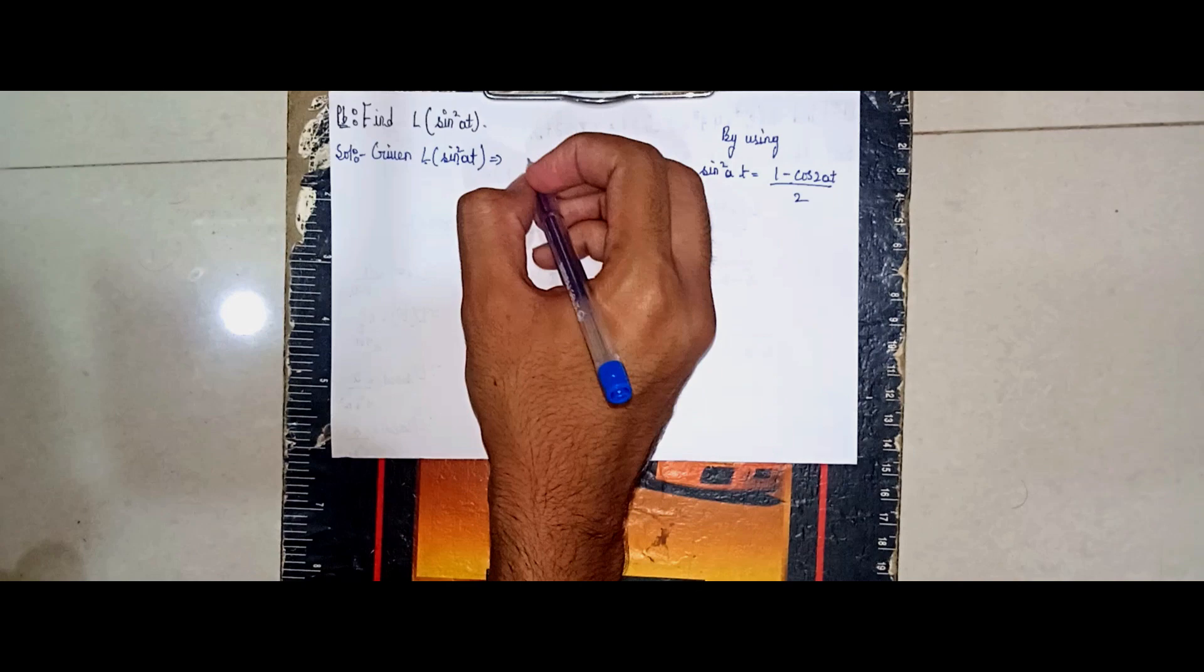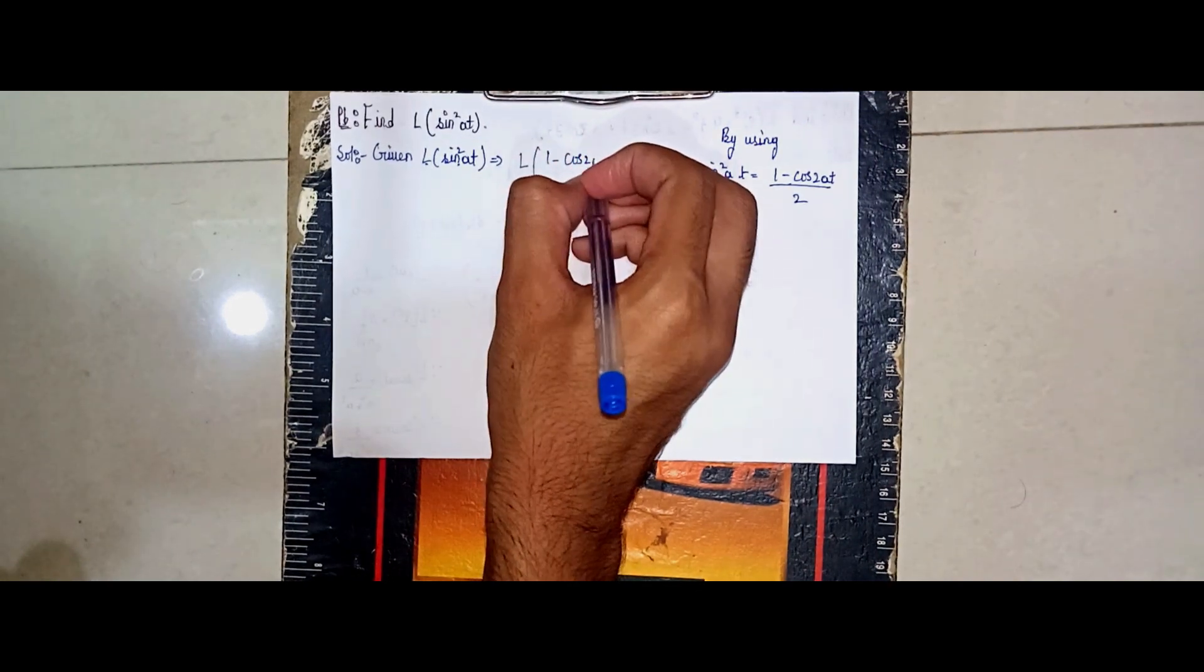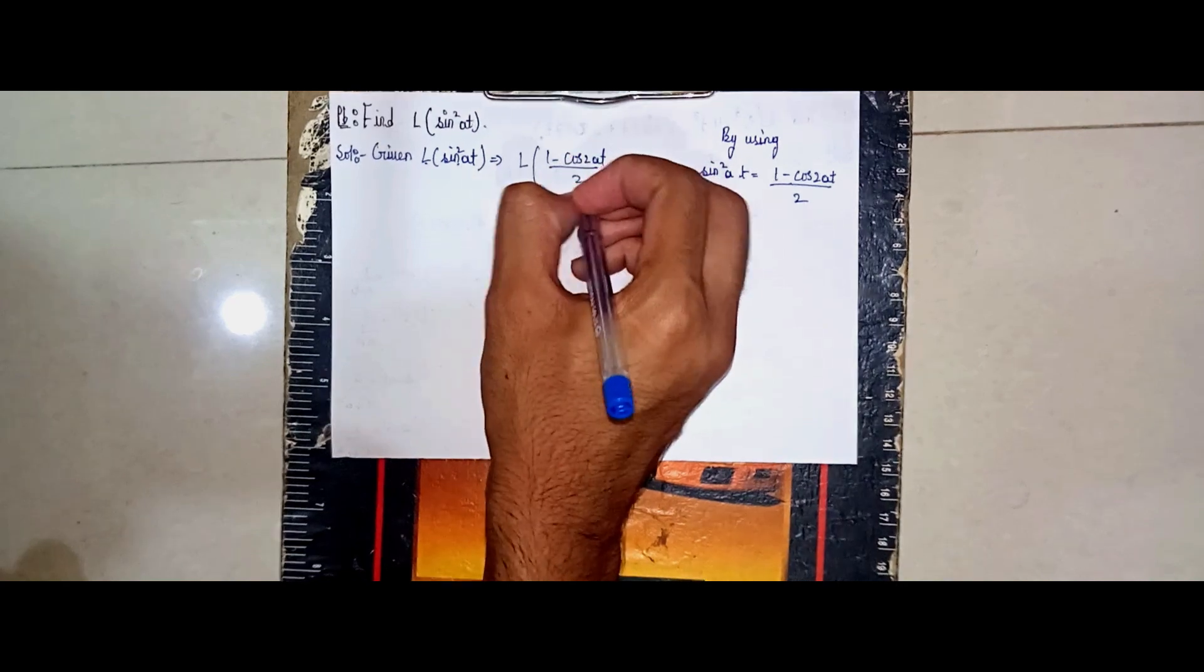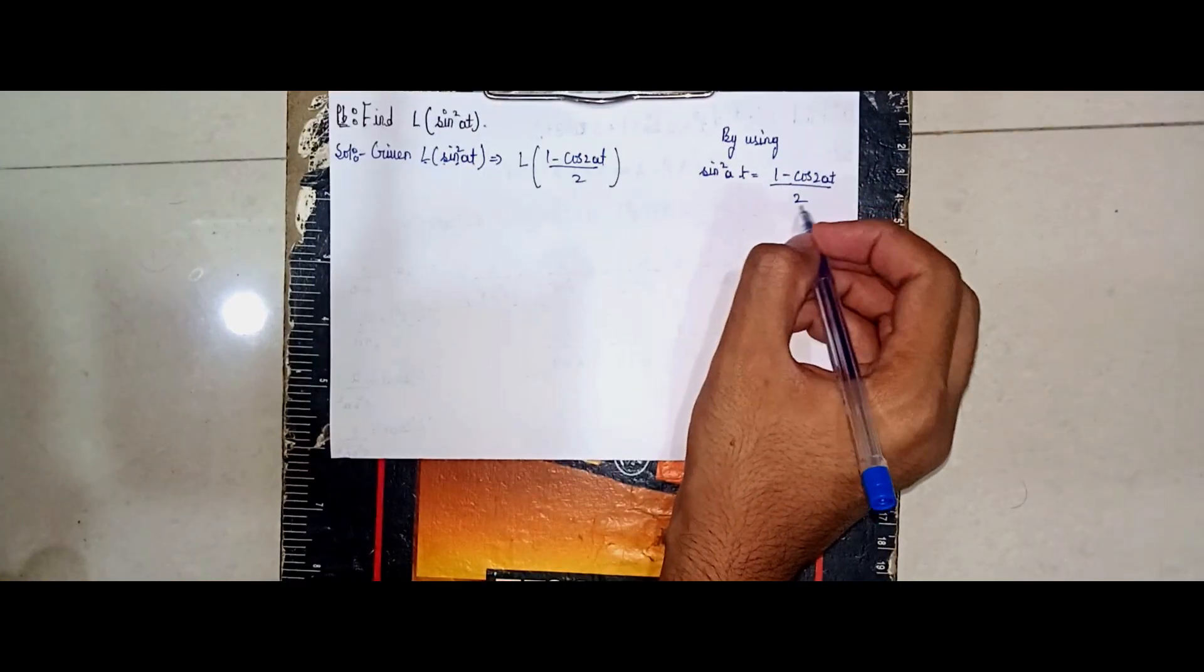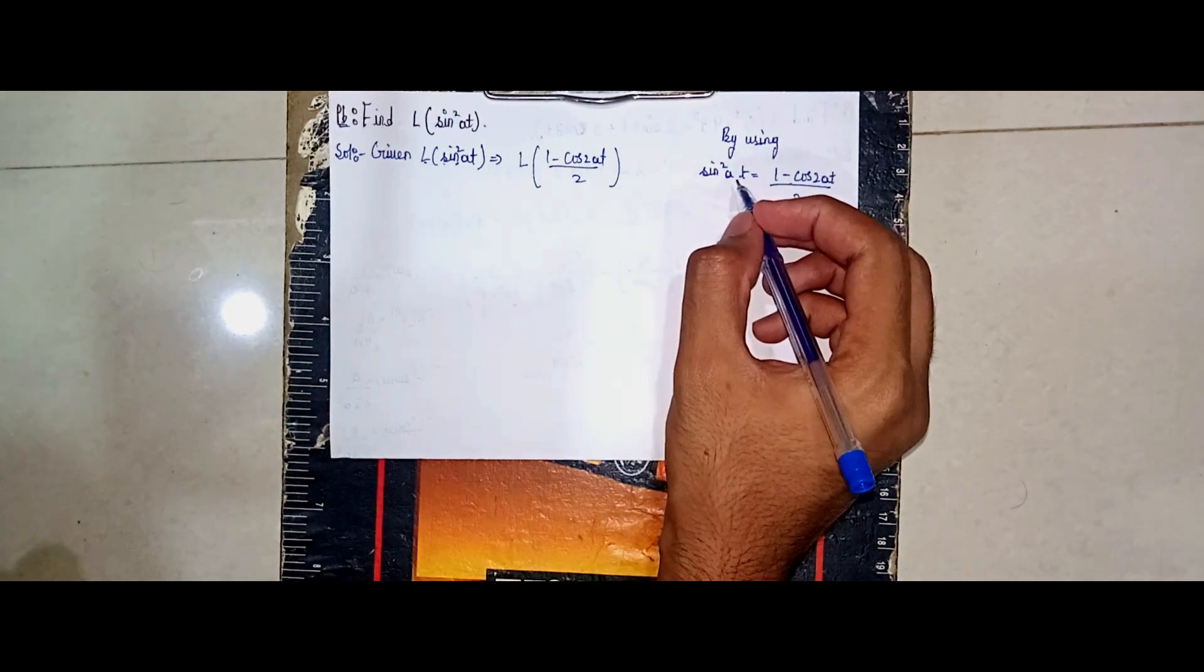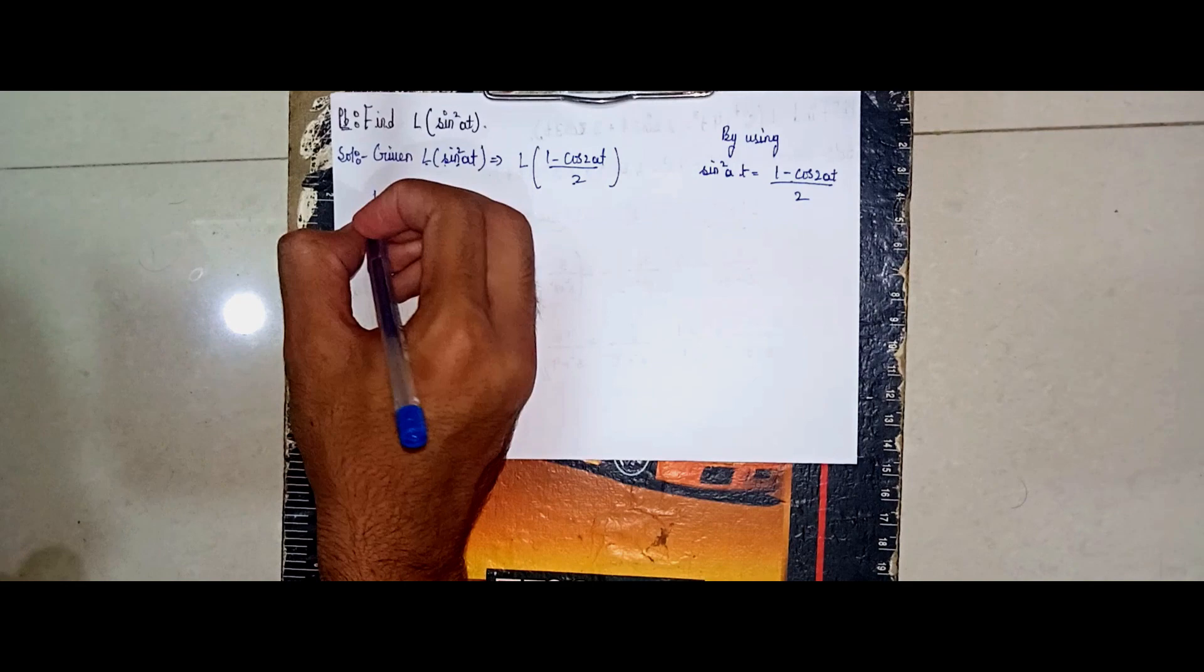Now it will become Laplace of (1 minus cos 16t) divided by 2. We converted sin squared 8t as (1 minus cos 16t) by 2 using the formula. Don't be confused. Now take 2 out - it becomes 1/2.